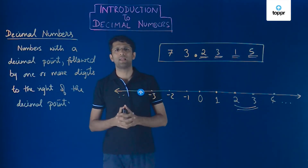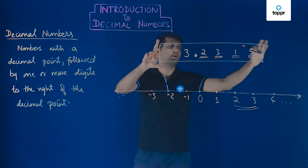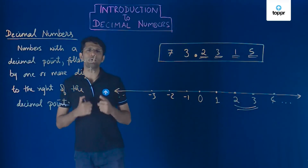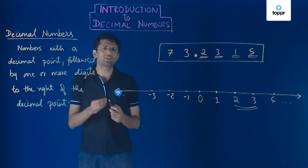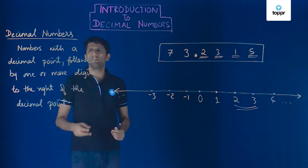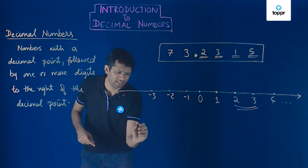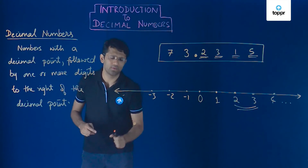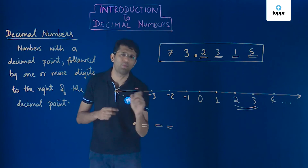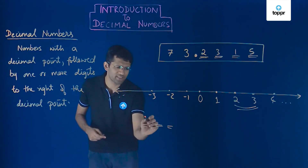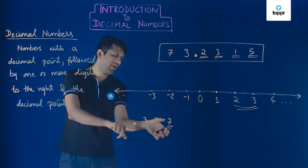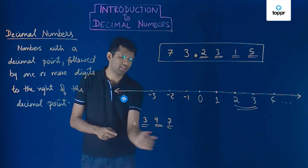We have now seen what decimal numbers are and how to write examples of decimal numbers. Can you think of some more decimal numbers? The process is simple — we follow the definition: decimal numbers always have a decimal point, with at least one digit to the right of it. So if we write digits say 3, 9, 7 to the right of the decimal point, and include a digit like 0 to the left, we get 0.397, which is a decimal number.